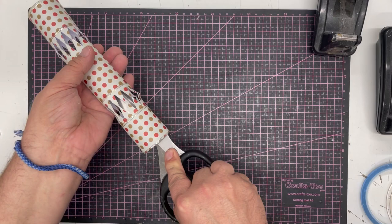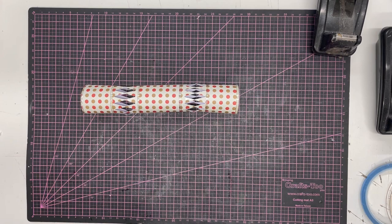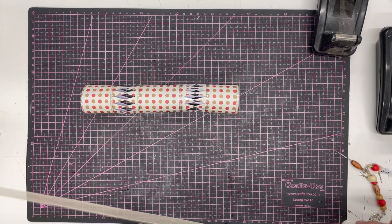I'm using here, this is actually a five millimeter organza ribbon, but you can use anything at all, twine or anything. So I'm just going to cut it into two pieces.